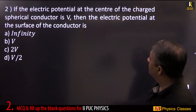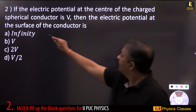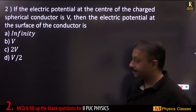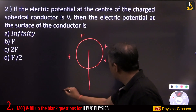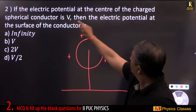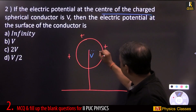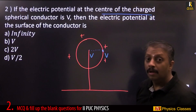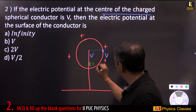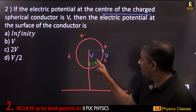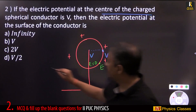If the electric potential at the center of a charged spherical conductor is V, then the electric potential at the surface is also V. The potential remains constant throughout — at the center, inside, and on the surface, it is V everywhere. The electric field inside the shell is zero, but potential remains the same, so the answer is V.